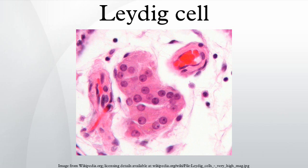Adult-type Leydig cells differentiate in the postnatal testes and are quiescent until puberty. They are preceded in the testes by a population of fetal-type Leydig cells from the eighth to the twentieth week of gestation, which produce enough testosterone for masculinization of a male fetus.